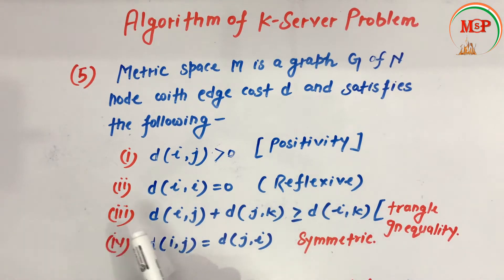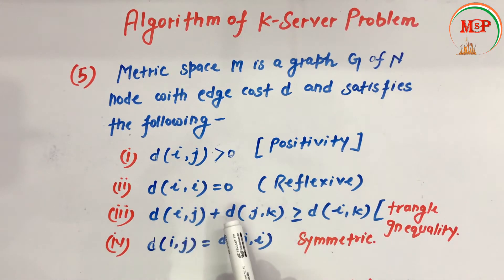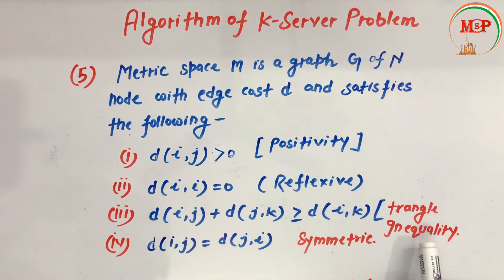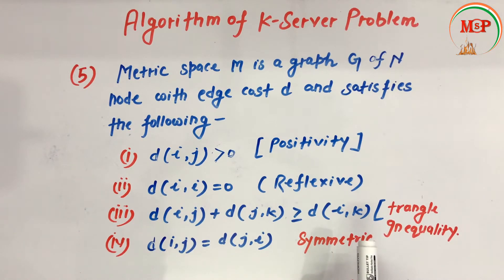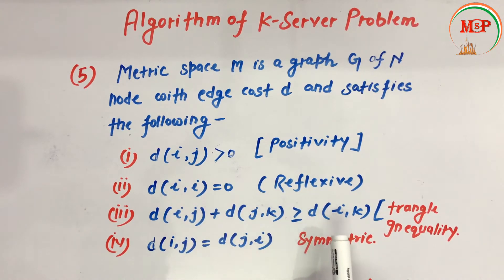The third condition is: distance from i to j plus distance from j to k is greater than or equal to distance from i to k. That is, if we sum the distances between two nodes in the metric space, that should be greater than or equal to the distance to the third node. This is called the triangle inequality condition, which the k-server problem's metric space must follow.